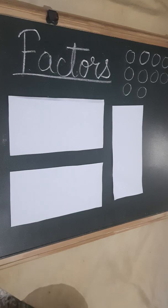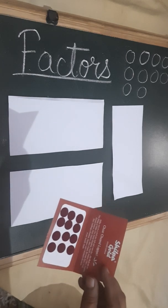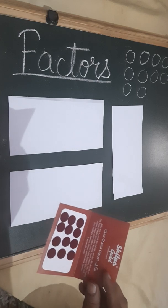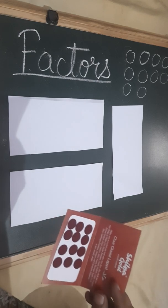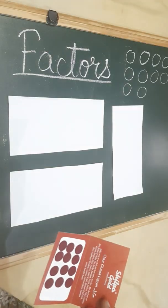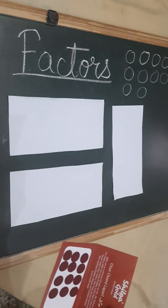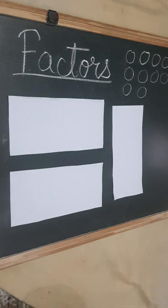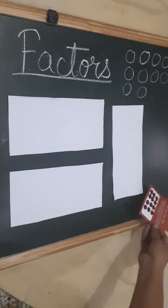So here I am taking 12 bindis and I have to arrange these bindis in rows, each having the same number of bindis. So how can I arrange them in different numbers of rows? Let us arrange these 12 bindis.